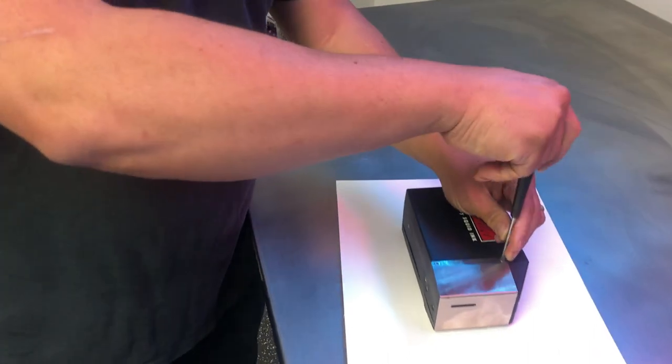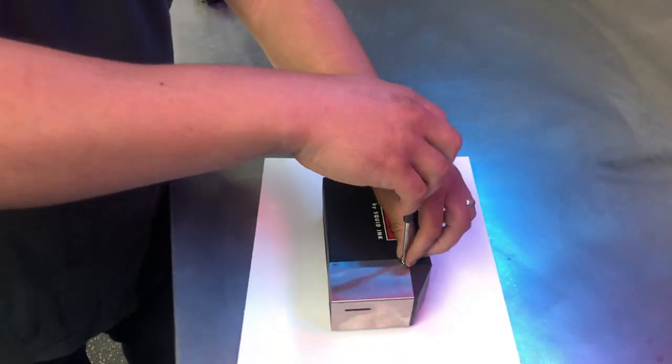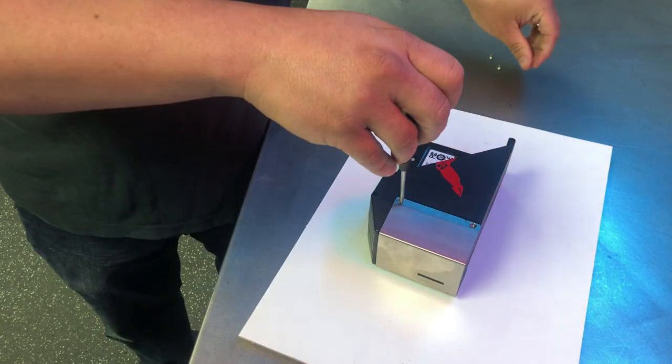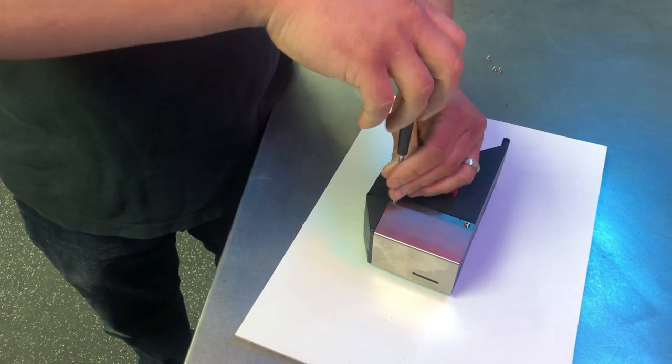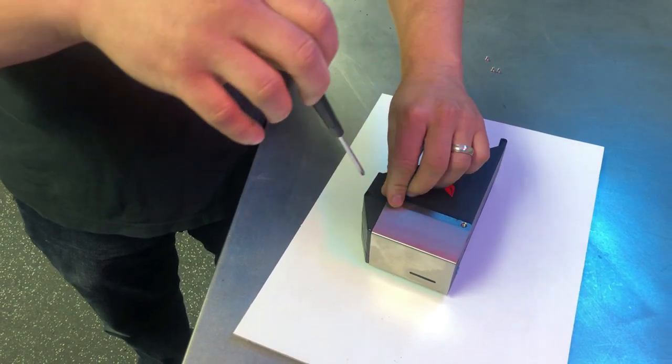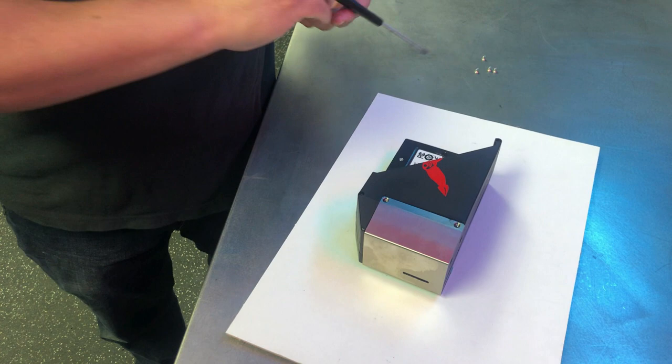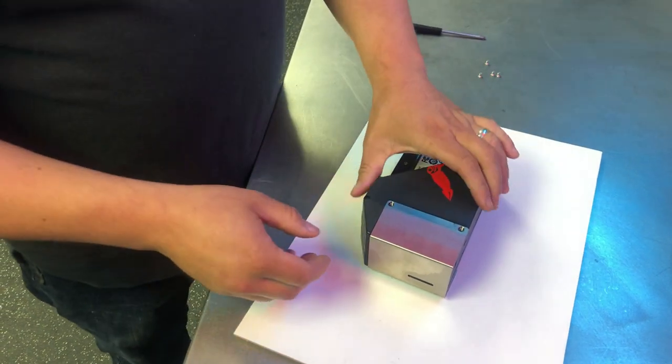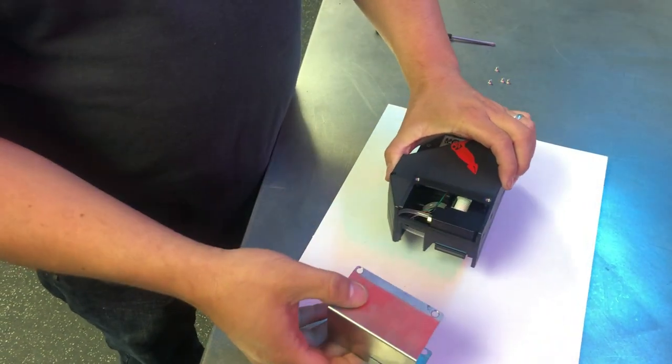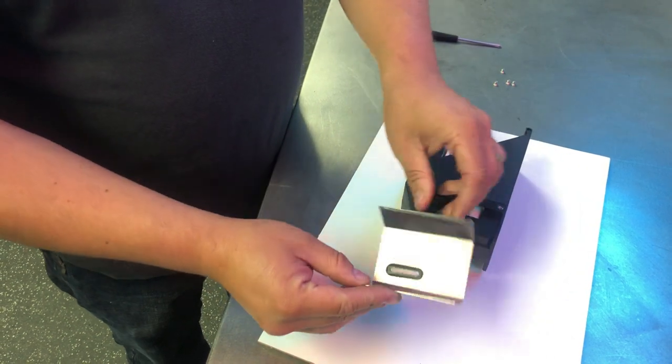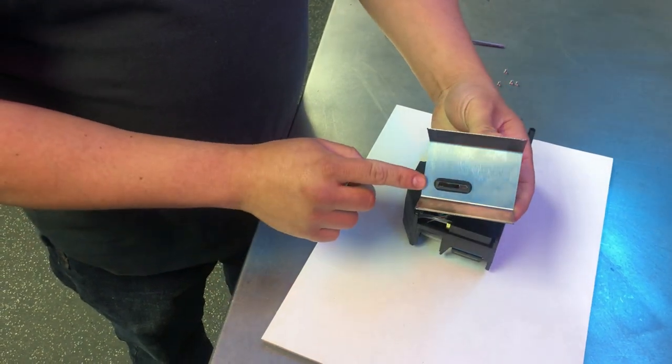Four screws will hold that into place. With the screws removed, you should be able to pull the stainless steel cover right off. Inspect the quality of the gasket.